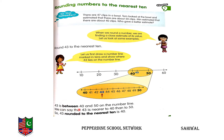43 is between 40 and 50 on the number line. We can say that 43 is nearest to 40, not to 50. So 43 rounded to the nearest 10 is 40.